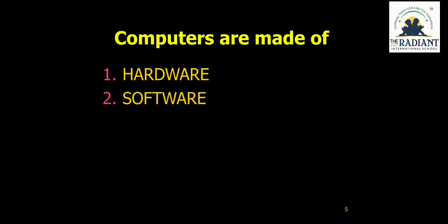Hardware and software are interdependent. Interdependent means they depend on each other — without software, a computer cannot work. Similarly, if hardware is not there, software is of no use. This can be understood with the help of one example.